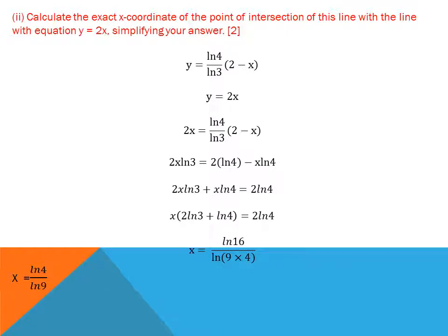Setting Y = (ln 4 / ln 3)(2 − X) equal to Y = 2X, so 2X = (ln 4 / ln 3)(2 − X). Simplifying: 2X·ln 3 = 2·ln 4 − X·ln 4. Taking X terms to one side: X(2·ln 3 + ln 4) = ln 4. Using logarithm rules, 2·ln 3 = ln 9 and 2·ln 4 = ln 16, so X = ln 16 / (ln 9 · 4) = ln 4 / ln 9·4, giving X = ln 4 / ln 36.